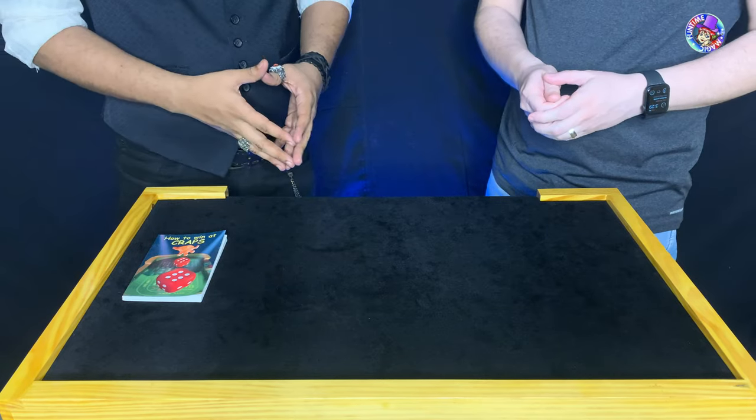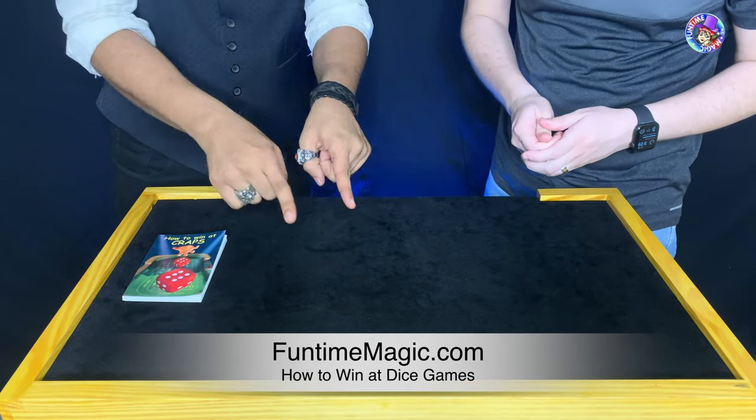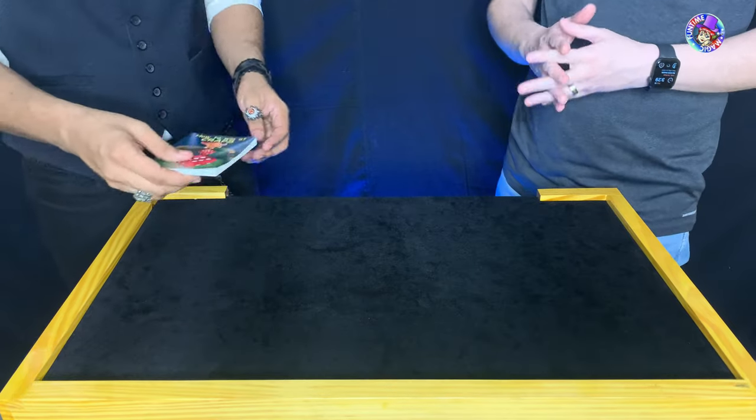What numbers are on top? It's the same number on both dice. That's fantastic. What numbers are those on top? Four and four.